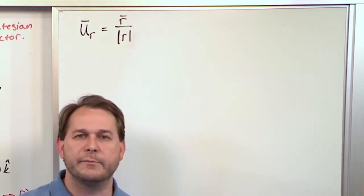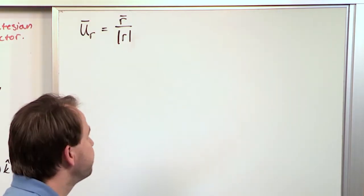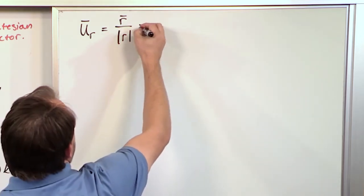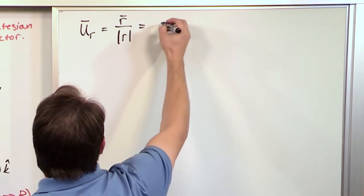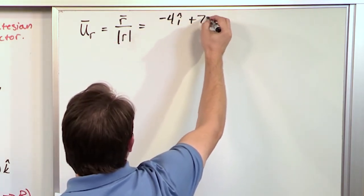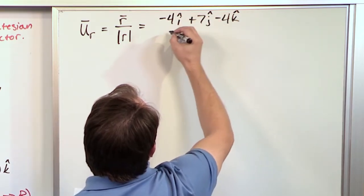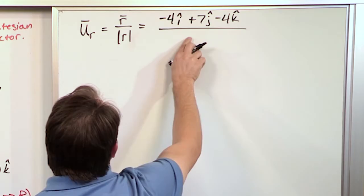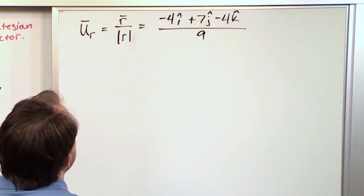That chops all the components down so that you still retain the direction, but the magnitude becomes 1. So, what we do then is we say R, this is the vector that we calculated, let's write that down on top, negative 4i plus 7j minus 4k. So, this is a position vector. And then we divide by what is the magnitude of R? We just calculated that that's 9.